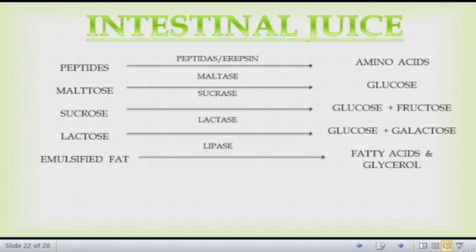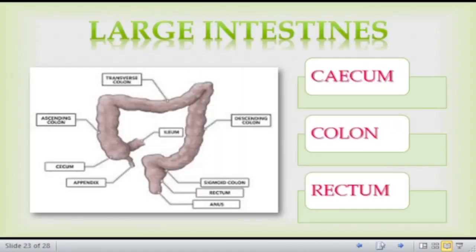The small intestine converts maltose, glucose, and fat. The large intestine consists of three parts: the caecum, colon, and rectum. The rectum is the place where food is stored temporarily. In the large intestine, water is absorbed from the food, and then waste material is excreted out.